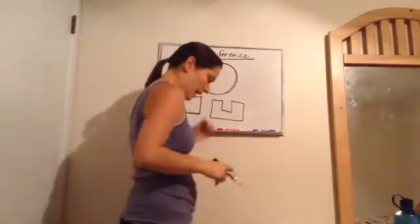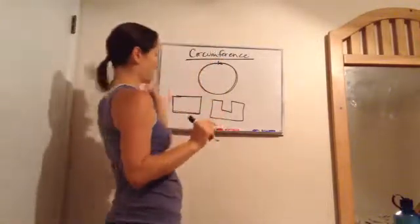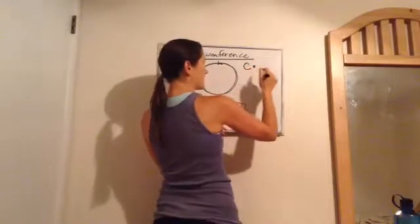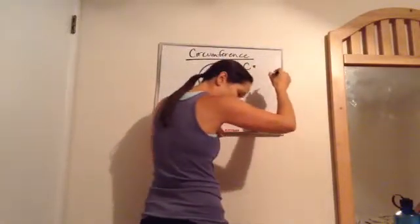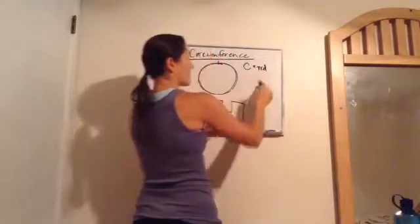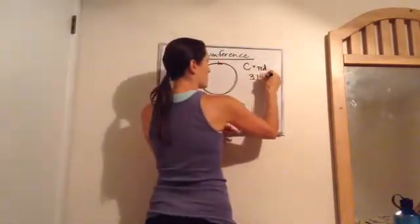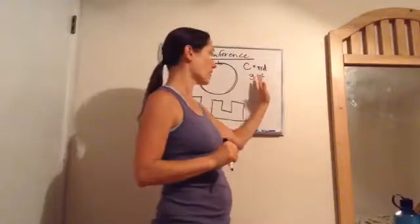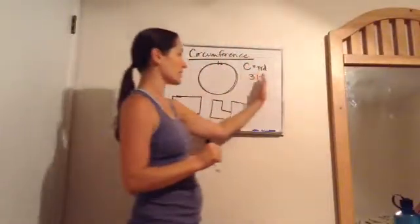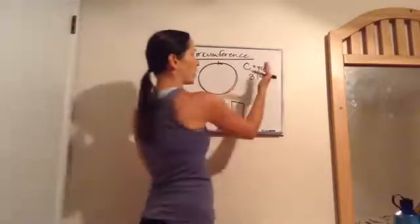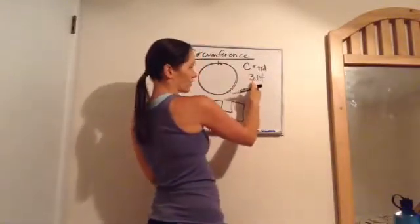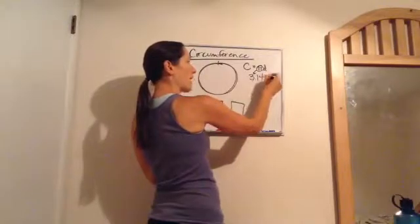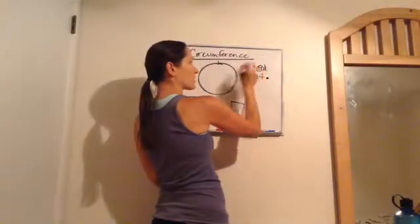The circumference — which I'll use as C — has the formula C = π times d. Pi, which we'll use as 3.14, is actually an irrational number, meaning it goes on forever and never stops. We stop after the second decimal place and just say it's 3.14.